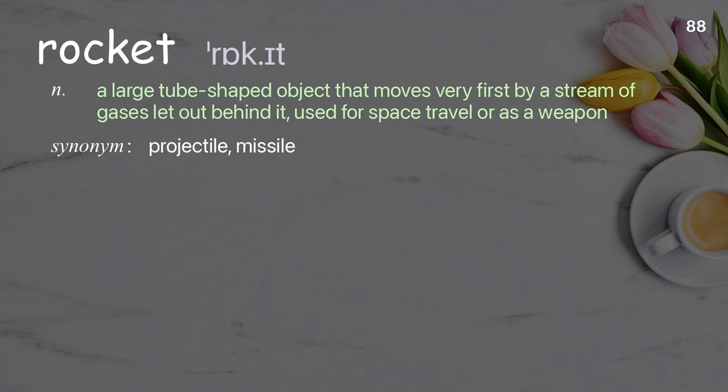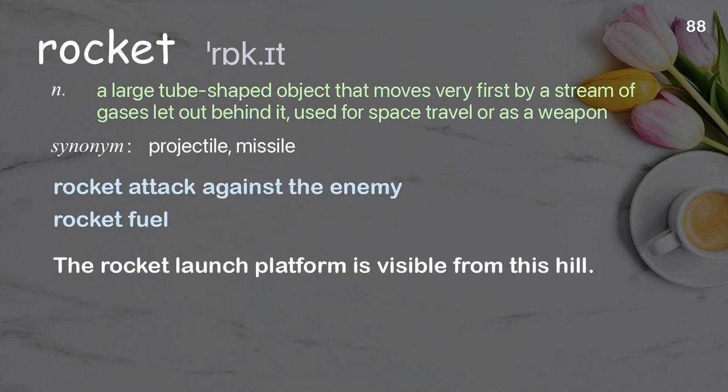Rocket. A large tube-shaped object that moves very fast by a stream of gases let out behind it, used for space travel or as a weapon. Examples: rocket attack against the enemy, rocket fuel. The rocket launch platform is visible from this hill.